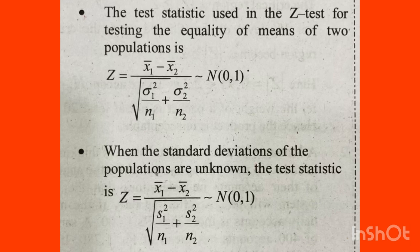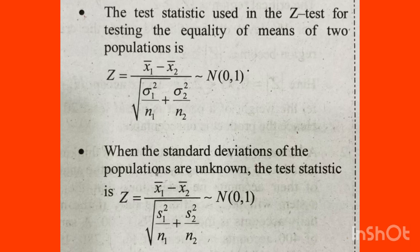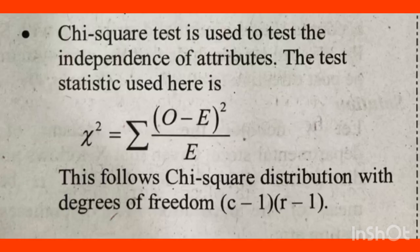The z-test statistic for testing the equality of means of two populations uses the formula: z = (x̄₁ - x̄₂) / √(σ₁²/n₁ + σ₂²/n₂). When the two population standard deviations σ₁ and σ₂ are unknown, we use: z = (x̄₁ - x̄₂) / √(s₁²/n₁ + s₂²/n₂), where s₁ and s₂ are the sample standard deviations.